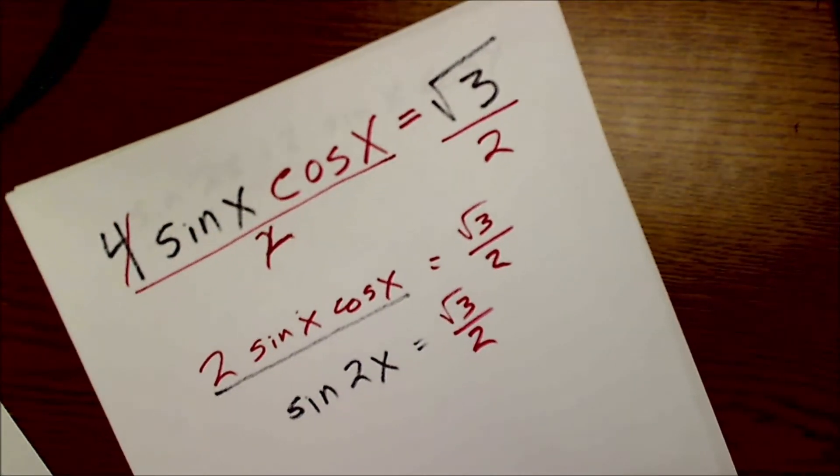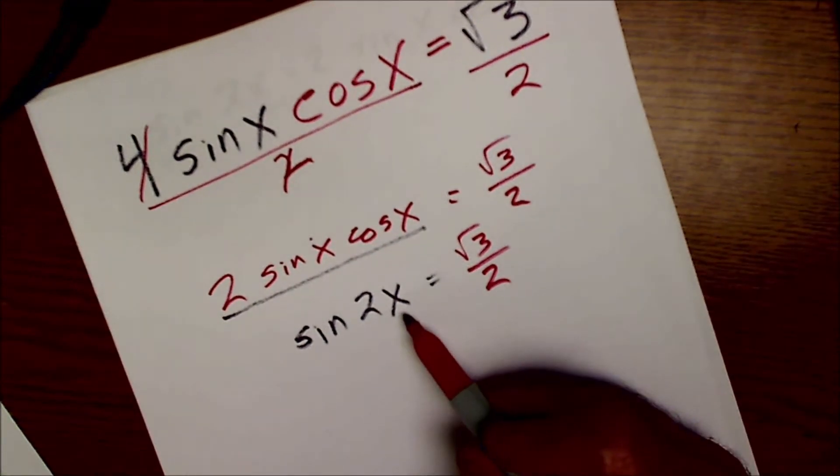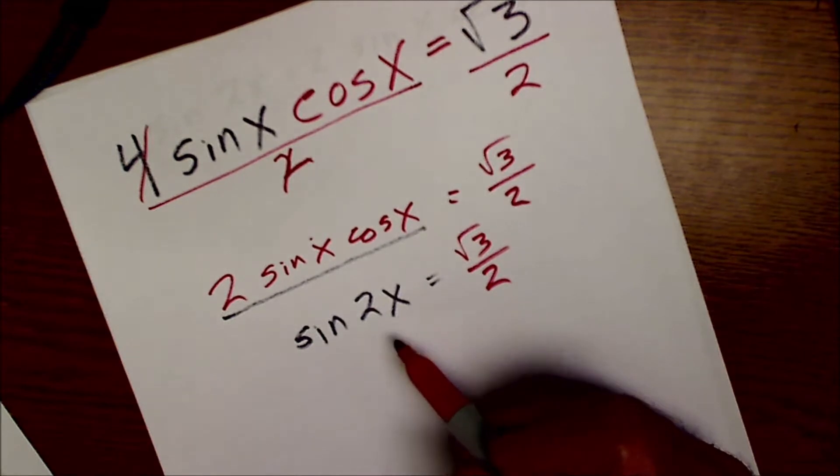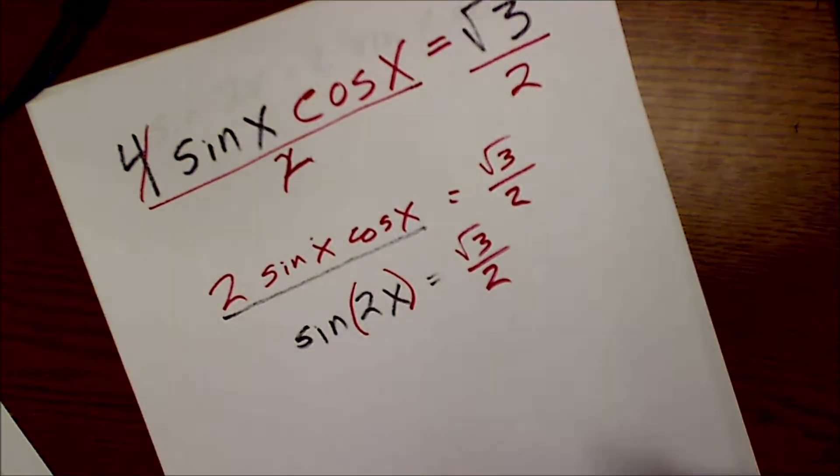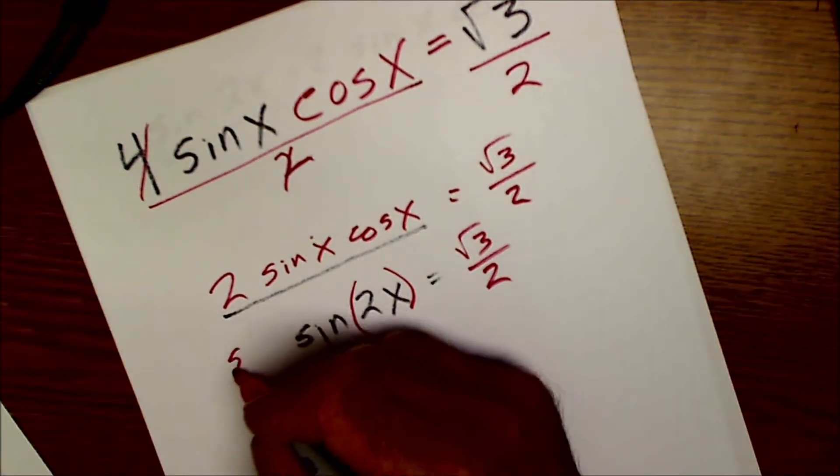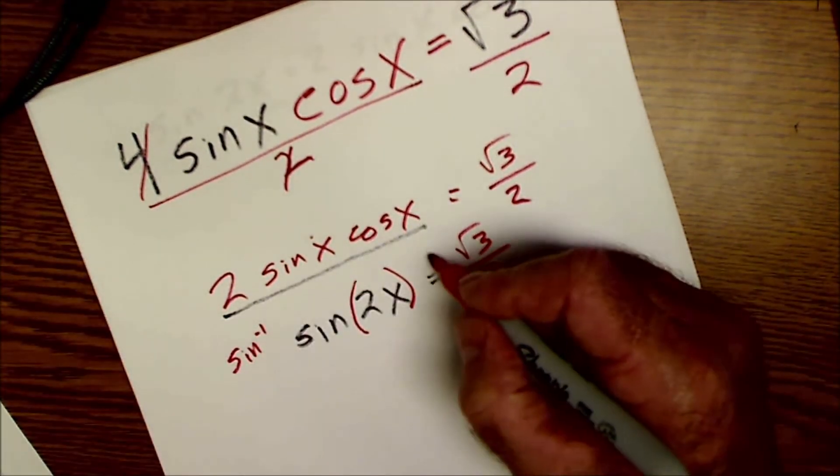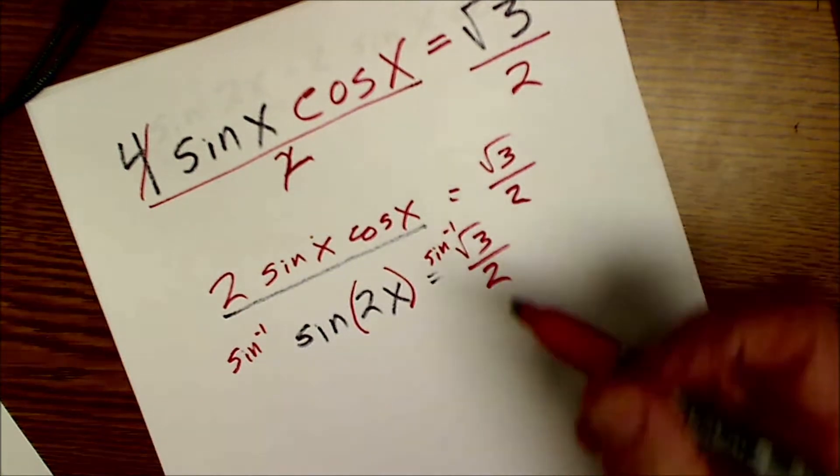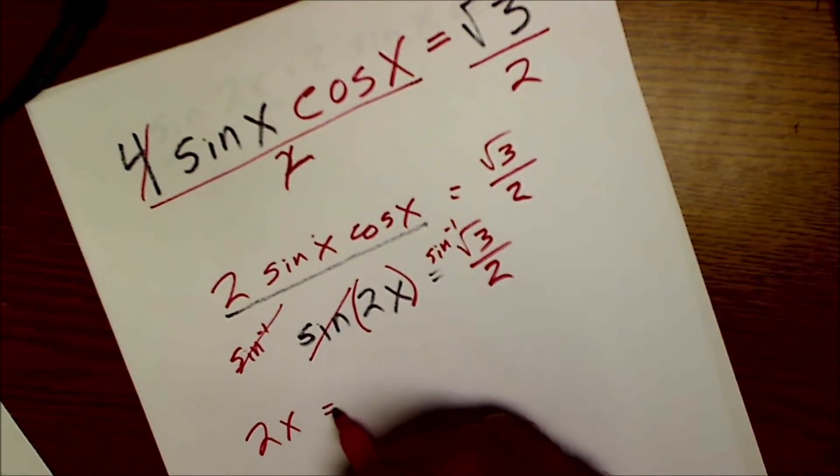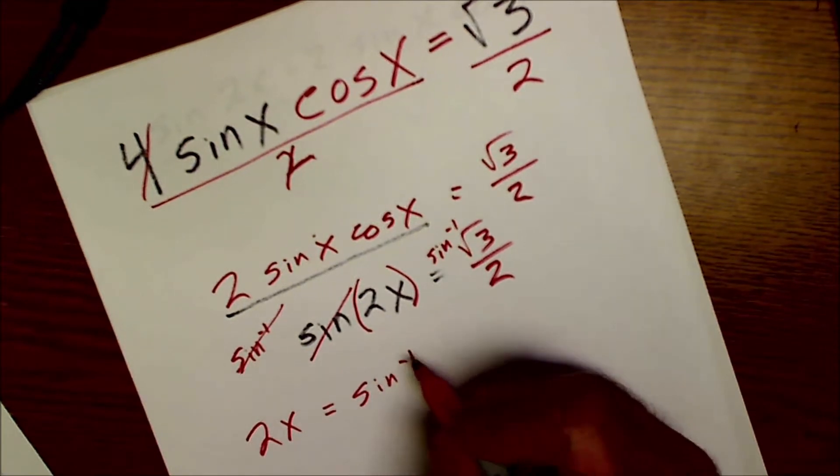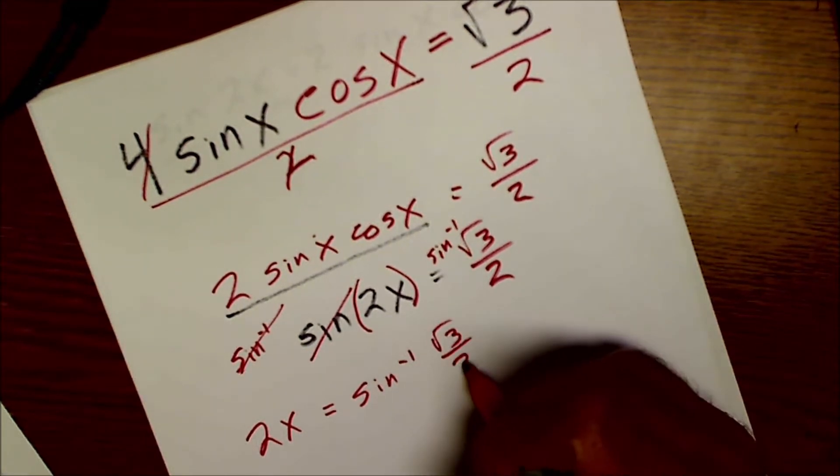Then from there I still have to isolate my variable x and I have a 2 in front of it. I'm really taking the sine of this whole thing here. So I have to take the arc sine of both sides. This cancels with that to give me 2x by itself and that's equal to the arc sine of root 3 over 2.